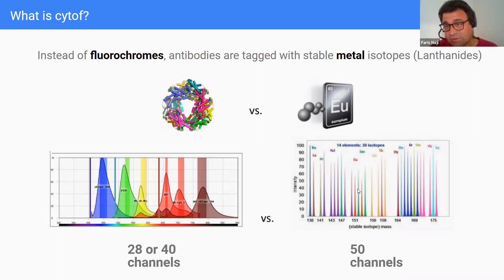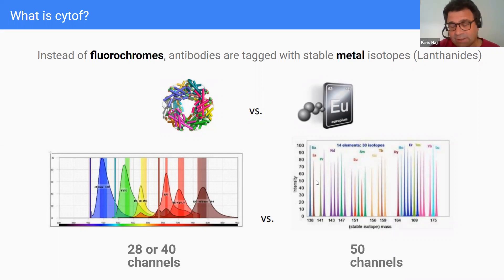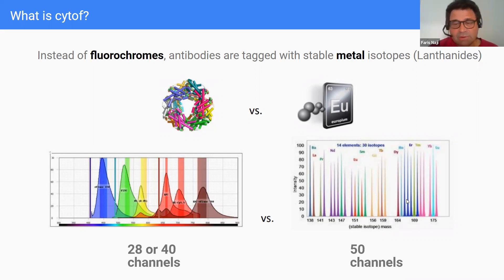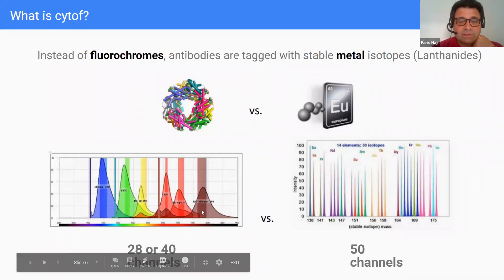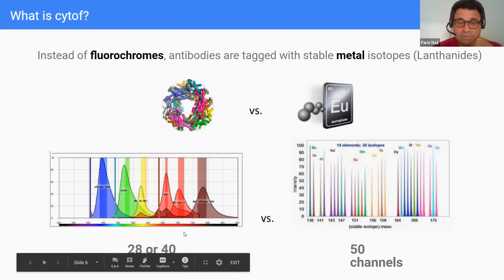In mass cytometry, metal isotopes give much sharper, more precise detection with no overlap — no stepping on toes — allowing a cleaner division and more channels. Flow cytometry is also increasing, with spectral approaches now going up to 40 channels. Currently 28 and 40 seem to be the standard possibilities available.